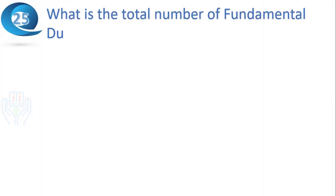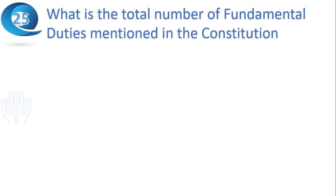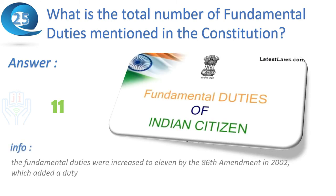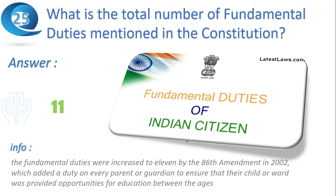The last question: what is the total number of fundamental duties mentioned in the Constitution? Answer: 11. The fundamental duties were increased to 11 by the 86th Amendment in 2002, which added a duty on every parent or guardian to ensure that the child or ward was provided opportunities for education between the ages of 6 and 14 years. Thank you friends.